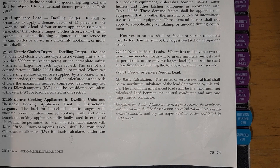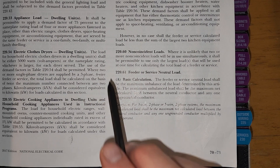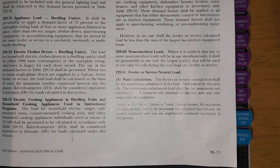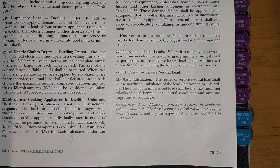Hey everyone, welcome back. I am the Electrical Code Coach. Today we're going to be taking a look at 220.60. We're talking about non-coincident loads — however you want to pronounce it.